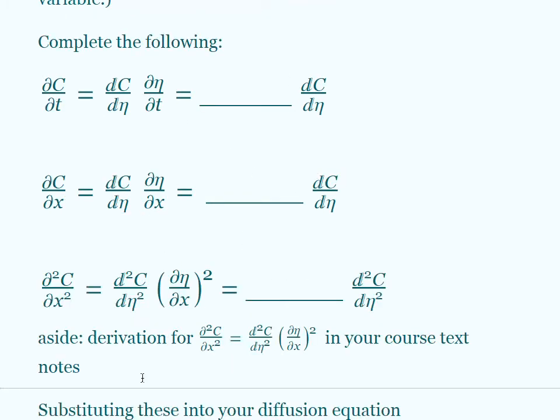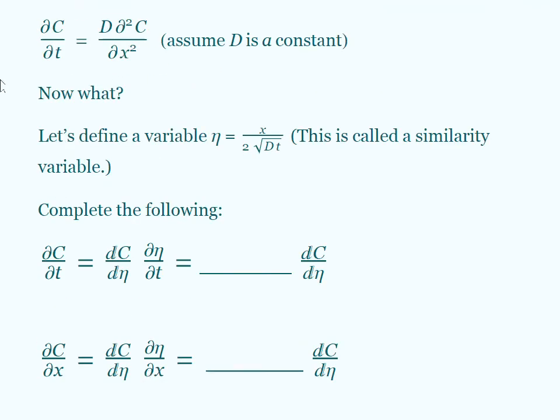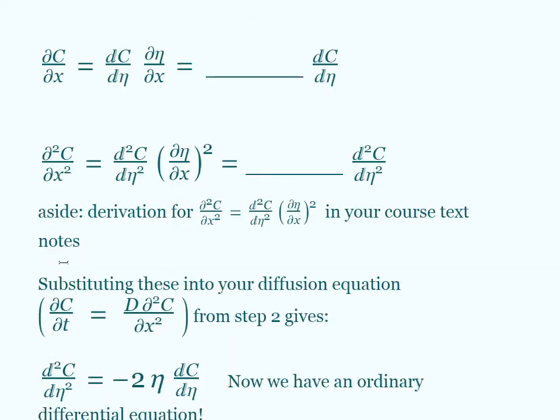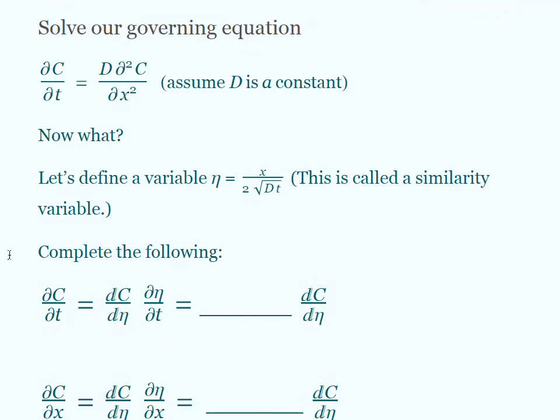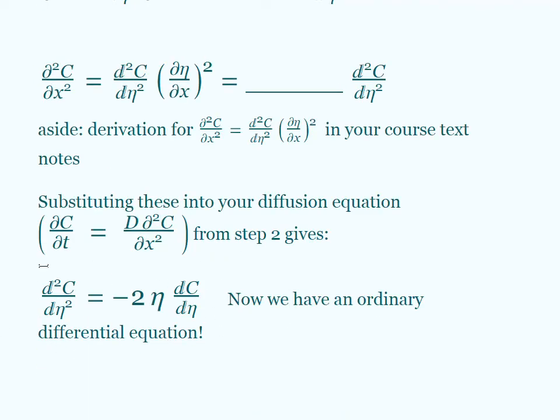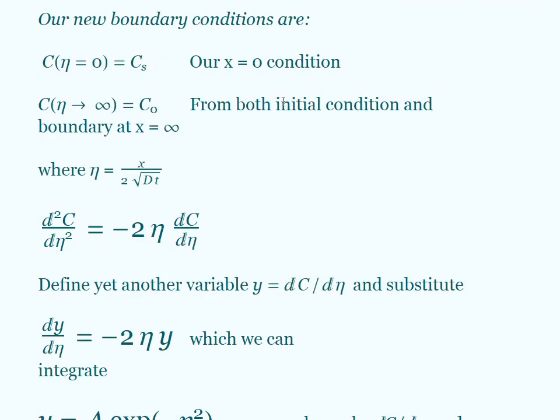Once we get those values, then we can substitute those all in to here, making the dc/dt and making the d²C/dx² substitutions. We substitute them in and we would get an ordinary differential equation. This is why we use this. We want to get rid of this partial differential equation that depends on two variables and have an ordinary differential equation now where we only have one variable and that's eta. This now is something that we can solve.